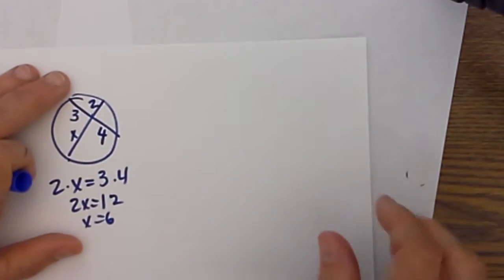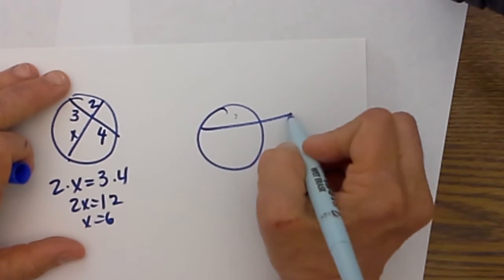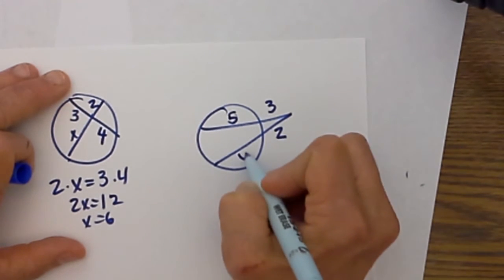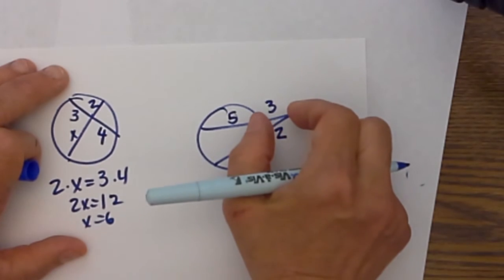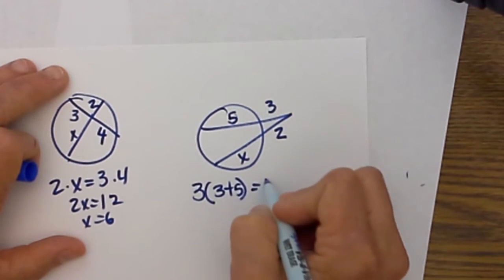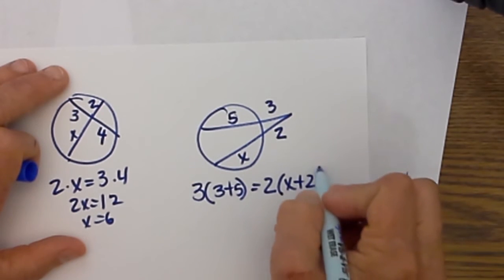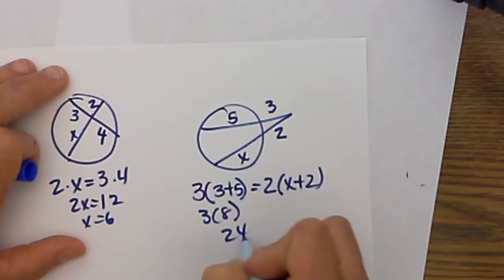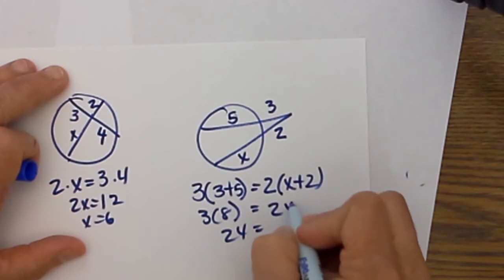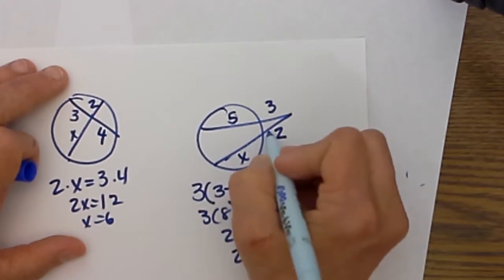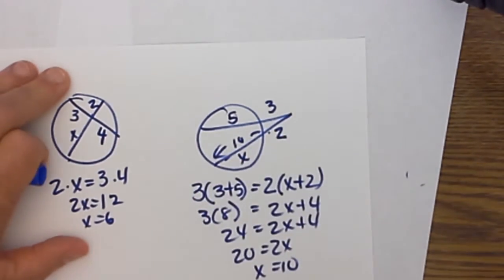Now let's look at one that is a secant-secant. So let's draw a secant-secant. Let's say this is 3, this is 5, this is 2, and this is x. So this one we take the outside times the whole thing. So we are going to take 3 times 3 plus 5 equals 2 times x plus 2. So you are going to add those together to get the whole secant segment. So we are going to have 3 times 8, which is 24, and that is equal to 2x plus 4. Let's just bring that down, subtract 4 from both sides. So we have 20 equals 2x, so x is 10. So that means this segment right here is 10.